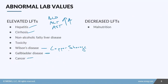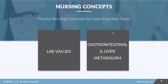Cancer is another reason you may see increases in liver values. Overall, decreased liver values are not very common, but when they do occur they're usually attributed to some sort of malnutrition — so by improving your patient's diet and nutrition, you can help improve those liver function test results.